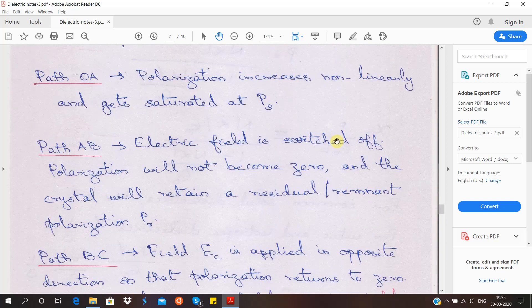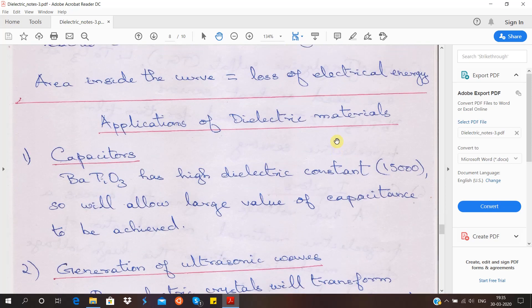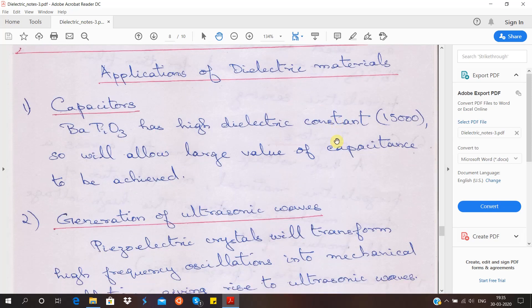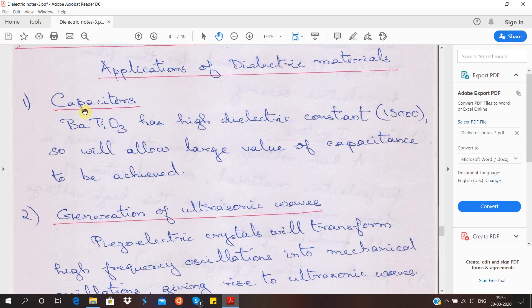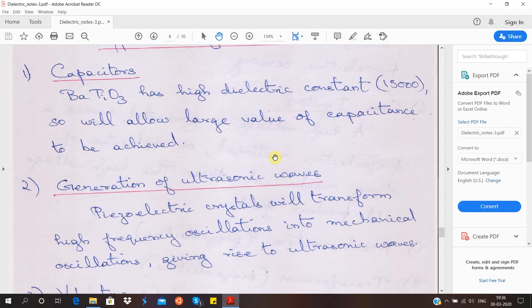Next, we move into the different applications of dielectric materials. The basic applications which we have been discussing all the while are capacitors. For an example, barium titanium oxide has very high dielectric constant of around 15,000. Before we proceed further in the case of applications, we just studied about ferroelectricity.